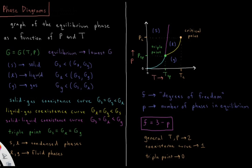For liquids, whenever you have a liquid, the Gibbs energy of it is lower than the Gibbs energy of the solid or the gas. Whenever you have a gas, the Gibbs energy of the gas is going to be lower than that of the solid or the liquid. For water, there are many different kinds of solid phases — water ice has many different kinds of phases, so you have to specify which kind of water ice you're talking about at a given temperature and pressure.